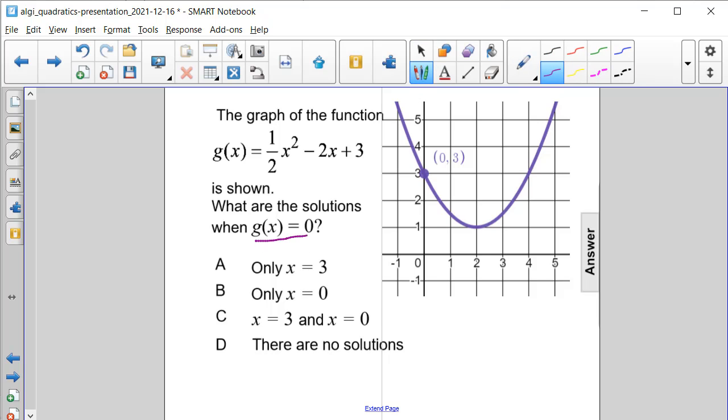Well, when a function is equal to 0, that means where it crosses the x-axis. Or we're looking for its x-intercepts, its zeros, or roots.